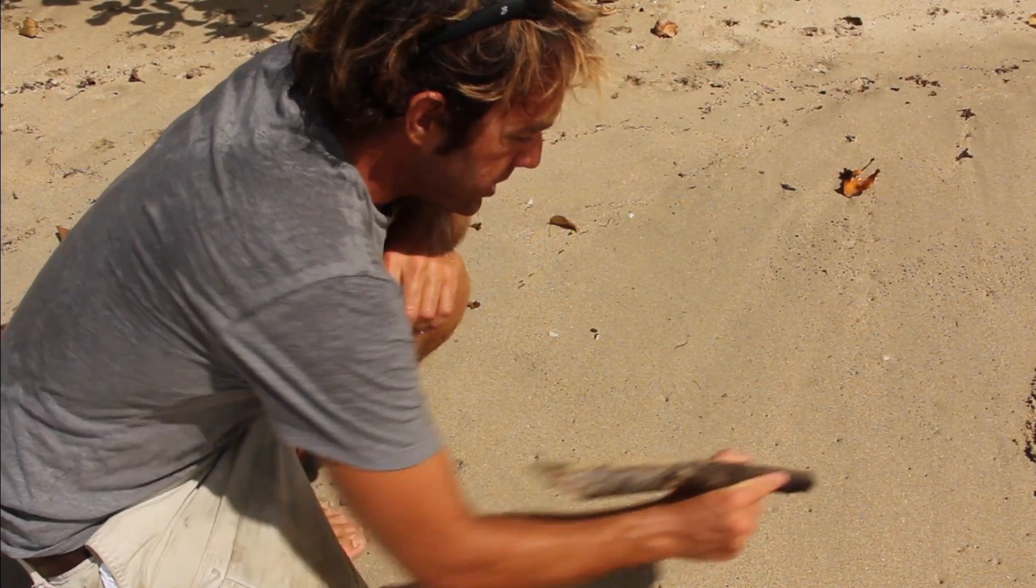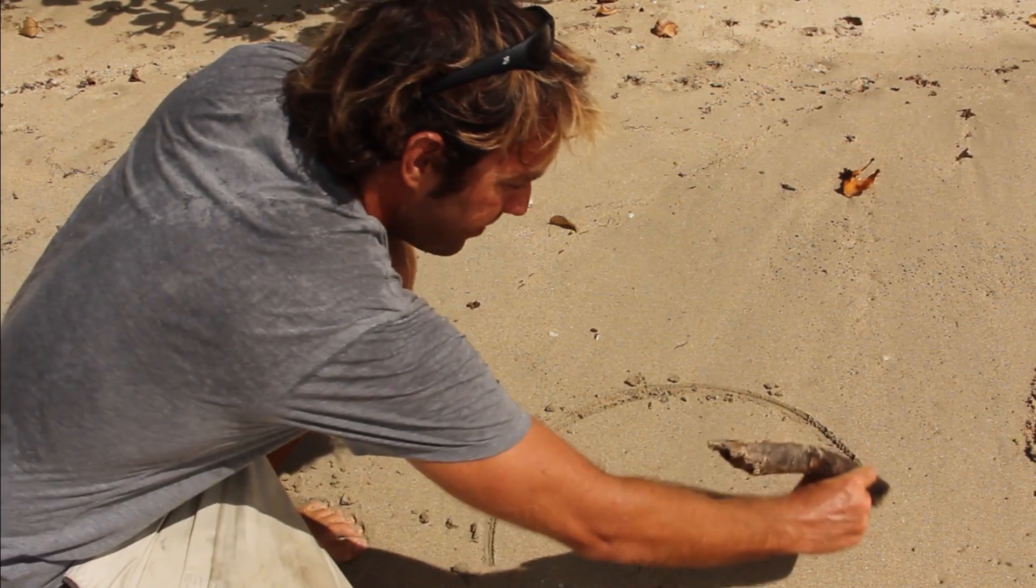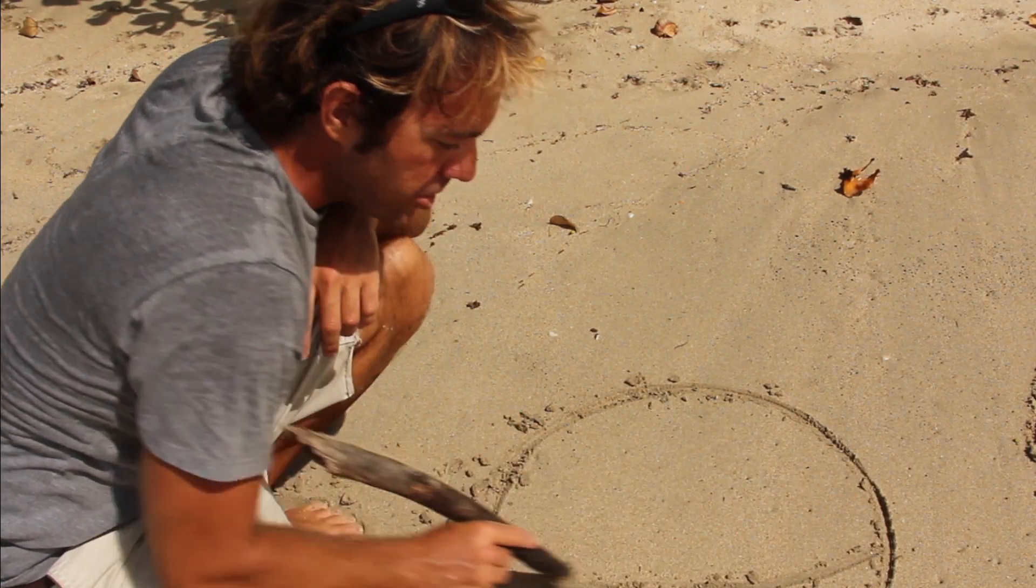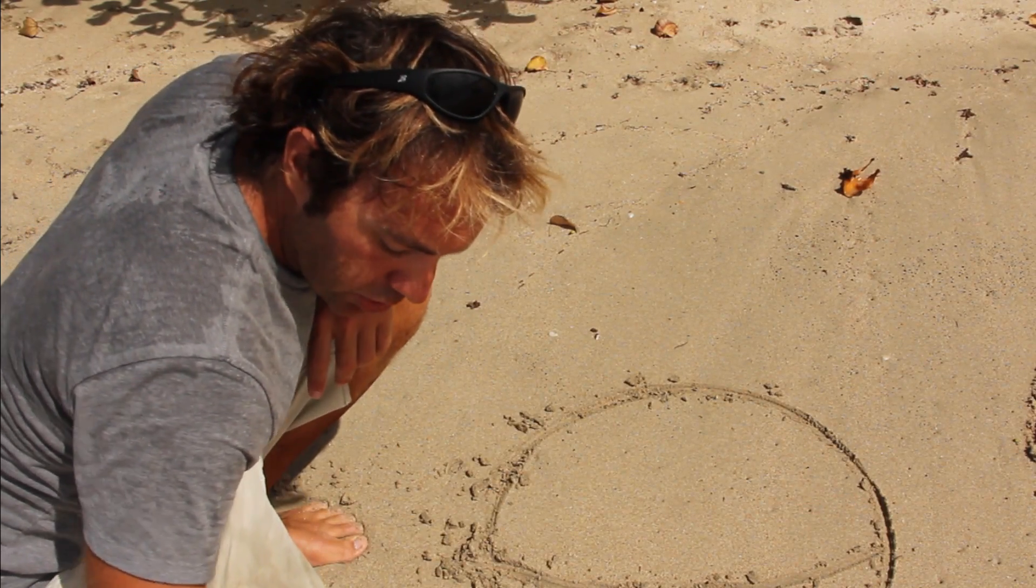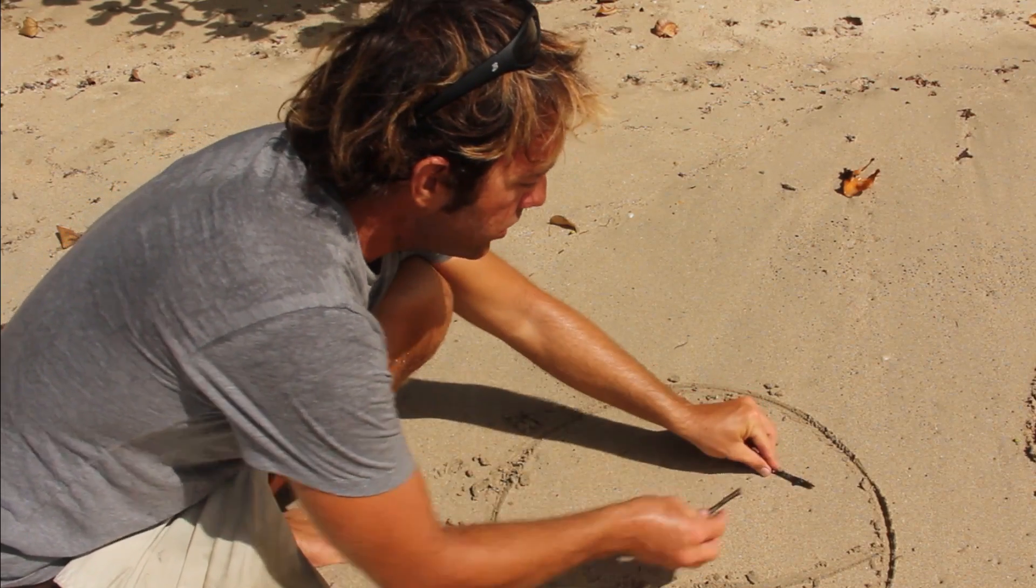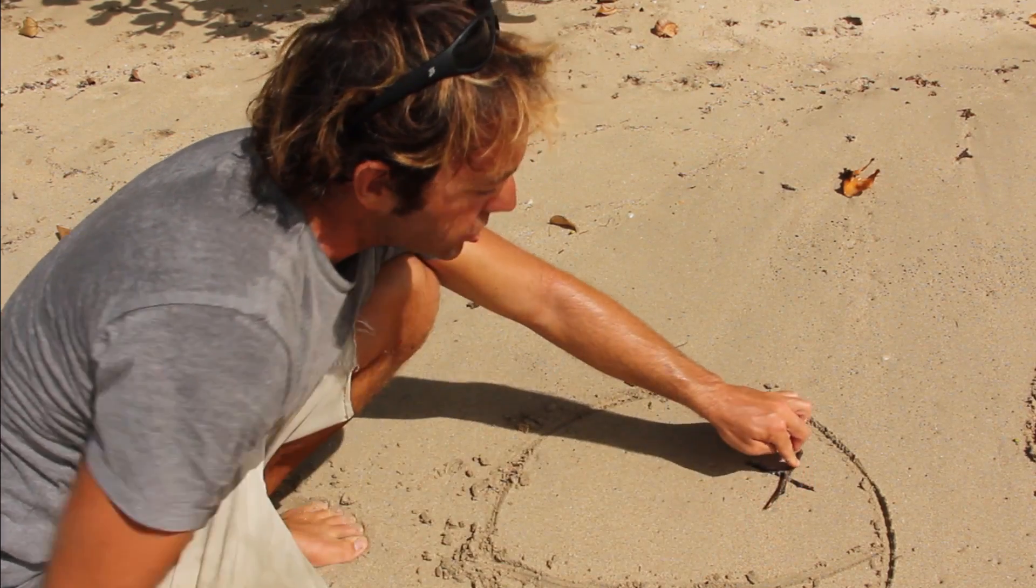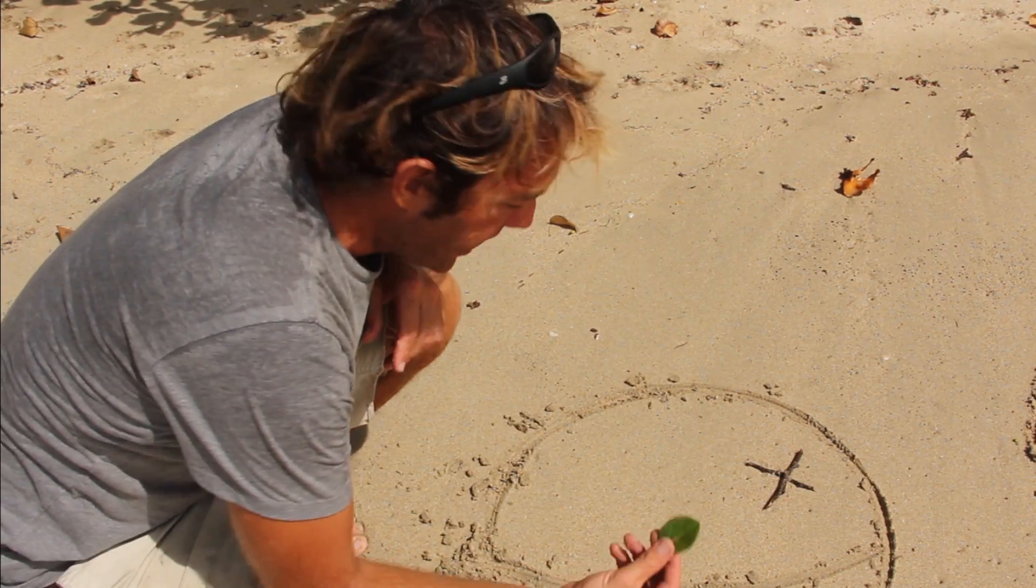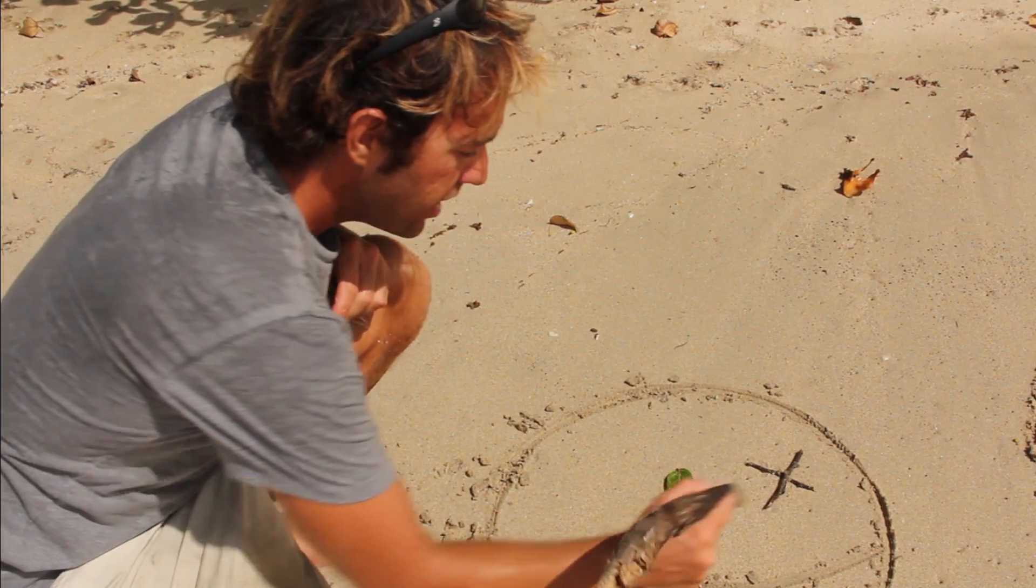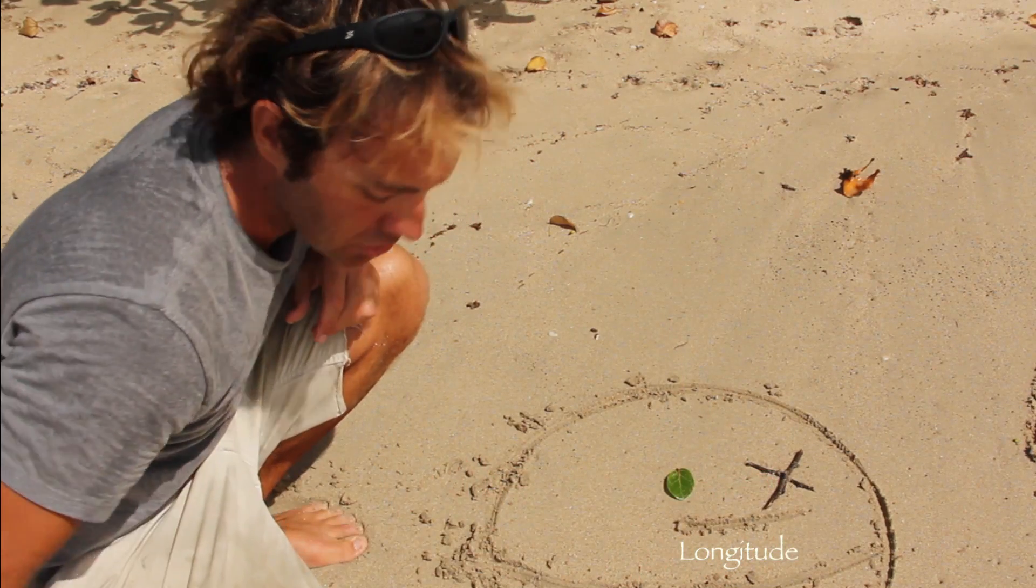Local hour angle can be described like this. If this is the Earth's surface, and this is the equator, we know that Greenwich, England has its own longitude, and it's special. Additionally, we have some longitude, and it's just called longitude.